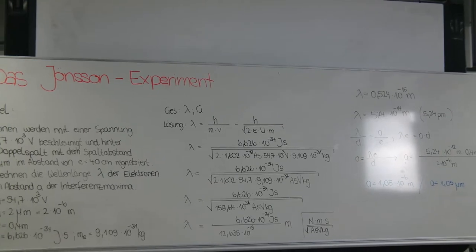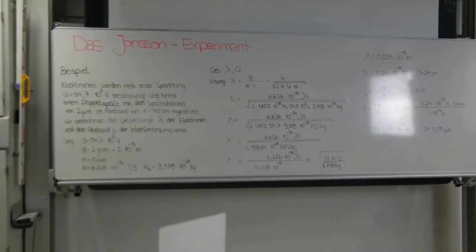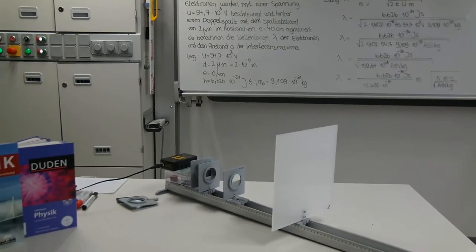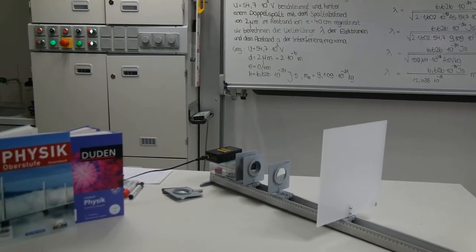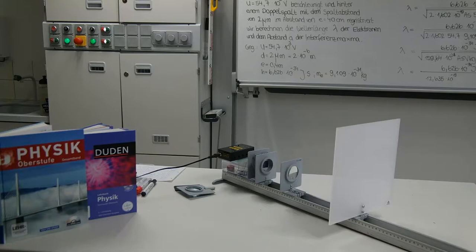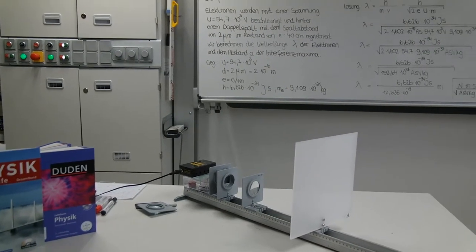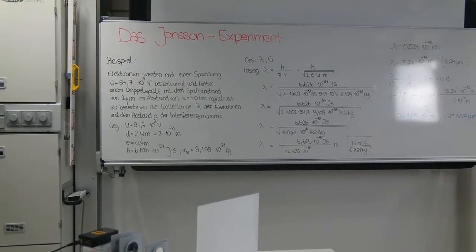Since electrons can be assigned a wavelength, interference experiments can also be performed with them. Gottfried Möllenstedt and his student Klaus Jönsson wanted to show with their 1950 experiment that electrons are not only particles, but like light also have wave properties.